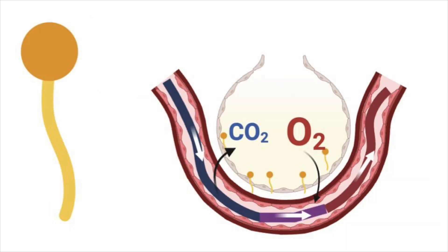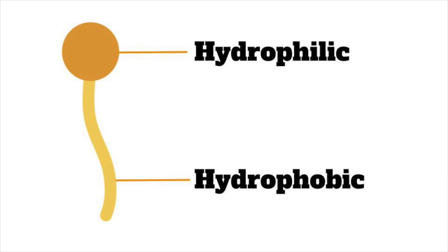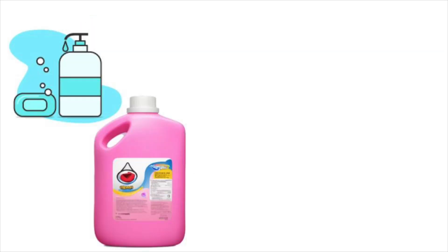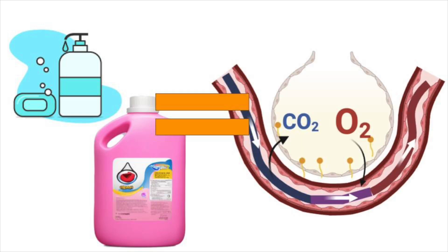Surfactant is the biological chemical produced inside lungs that helps reduce the surface tension inside the alveoli and keeps them open for effective gas exchange. Surfactants are actually the name of an entire group of chemicals in organic chemistry with a hydrophilic head and long hydrophobic tails. We interact with surfactants every day because they are the main chemical in soaps and detergents — so you can think of the biologic surfactant in our lungs as a type of soap, because chemically speaking they're the same.